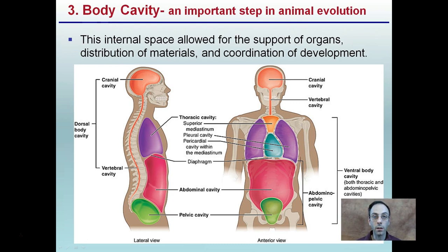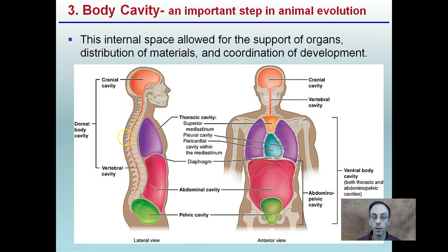The third key transition — the body cavity — is an important step in animal evolution, in terms of internal space allowed for the support of organs, distribution of materials, and coordination of development. Using the human as an example, we can think of a cranial cavity, thoracic cavity, abdominal cavity, and pelvic cavity. This is just one example of the development of body cavity as a key step in animal evolution.